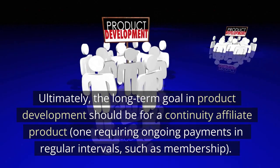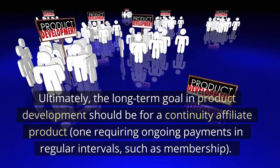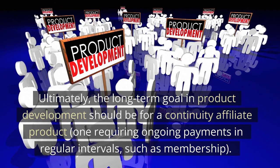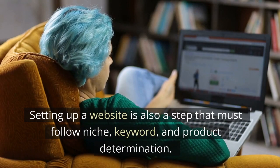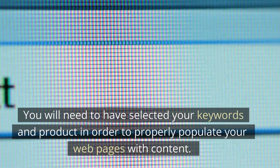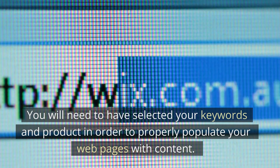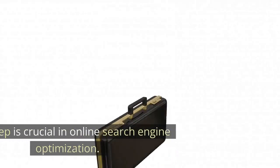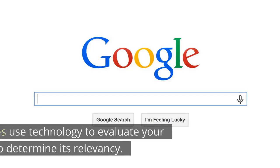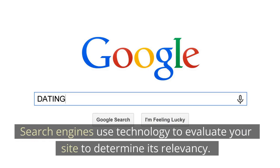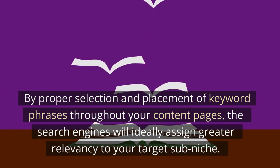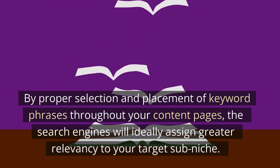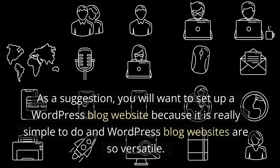Set up a WordPress blog website. Setting up a website is also a step that must follow niche, keyword, and product determination. You will need to have selected your keywords and product in order to properly populate your web pages with content. This step is crucial in online search engine optimization. Search engines use technology to evaluate your site to determine its relevancy. By proper selection and placement of keyword phrases throughout your content pages, search engines will ideally assign greater relevancy to your target sub-niche. A WordPress blog website is recommended because it is simple to set up and very versatile.